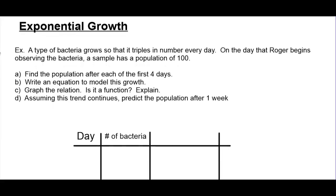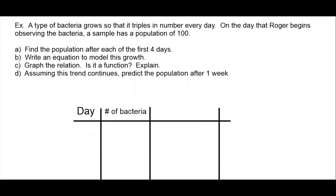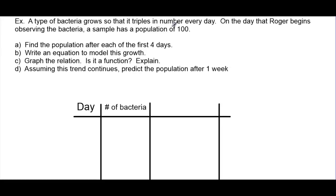Let's start by recording what Roger has seen over the first four days. We're going to call the initial day day zero, because no full days have yet happened. Roger noticed that his sample population started with a population of 100. So we're going to say that 100 is occurring on day zero, or after zero days have elapsed.